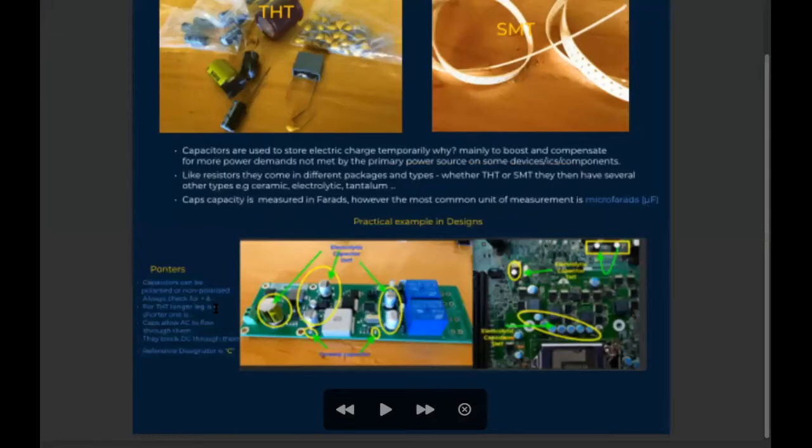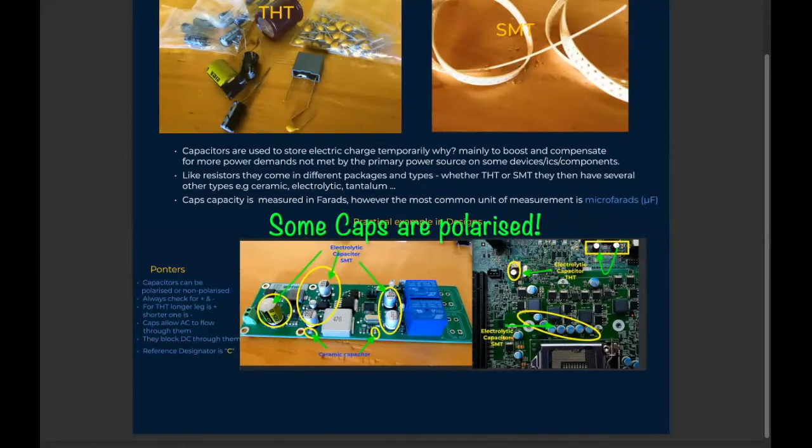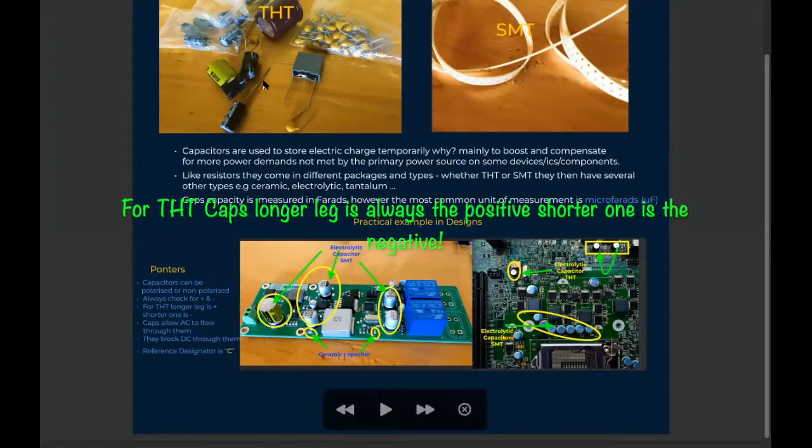A few pointers regarding capacitors. You have to know that unlike resistors, capacitors are polarized. They have positive and negative, so you have to be keen. One easy way to identify them is that the longer leg is usually the positive one. Like you can see here, we have longer and shorter. The longer one is always the positive and the shorter one is always negative.